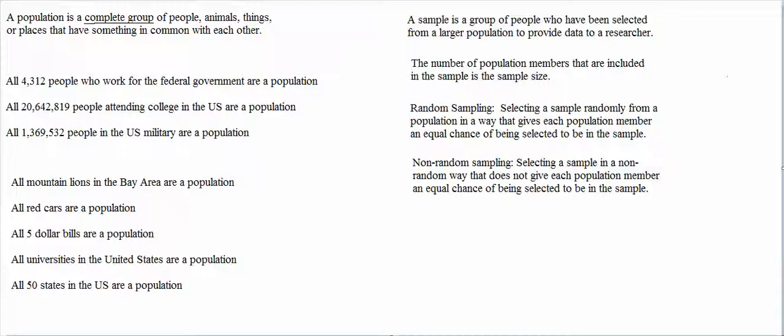Random sampling is sometimes called probability sampling, and non-random sampling is sometimes called non-probability sampling. The reason why these terms are used is because random sampling gives all population members an equal chance of being selected, and non-random sampling does not give all population members an equal chance of being selected.